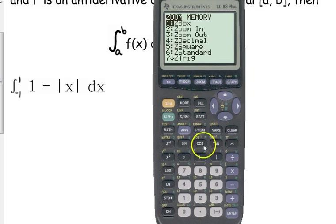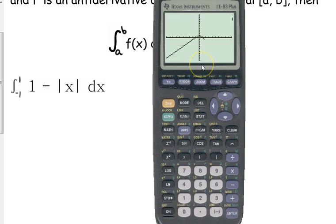So, here is the graph of 1 minus the absolute value of x. Now, we are going to integrate this from negative 1 to positive 1. Now, we don't have an anti-differentiation rule for the absolute value. We do not have an anti-differentiation rule for the absolute value.